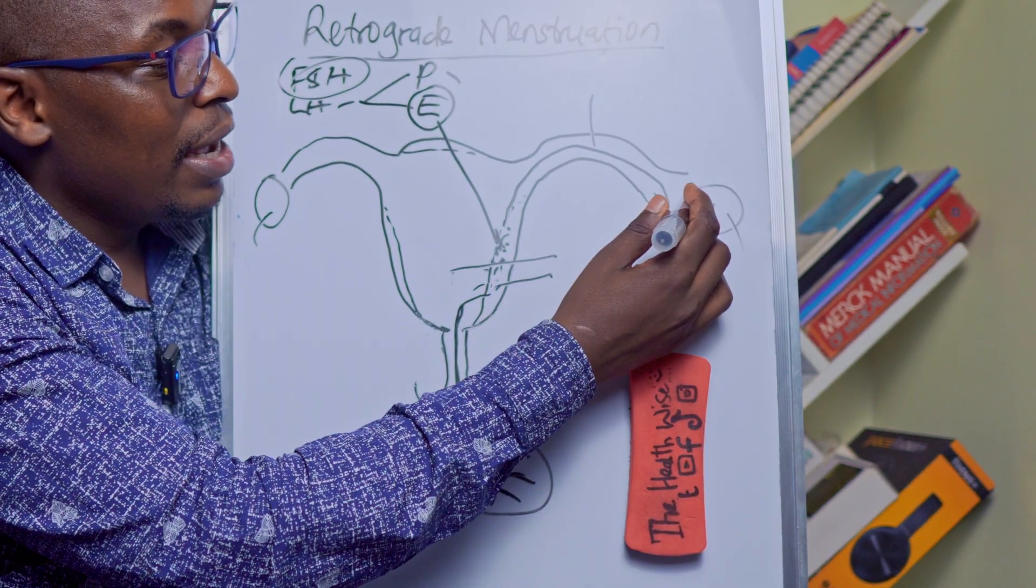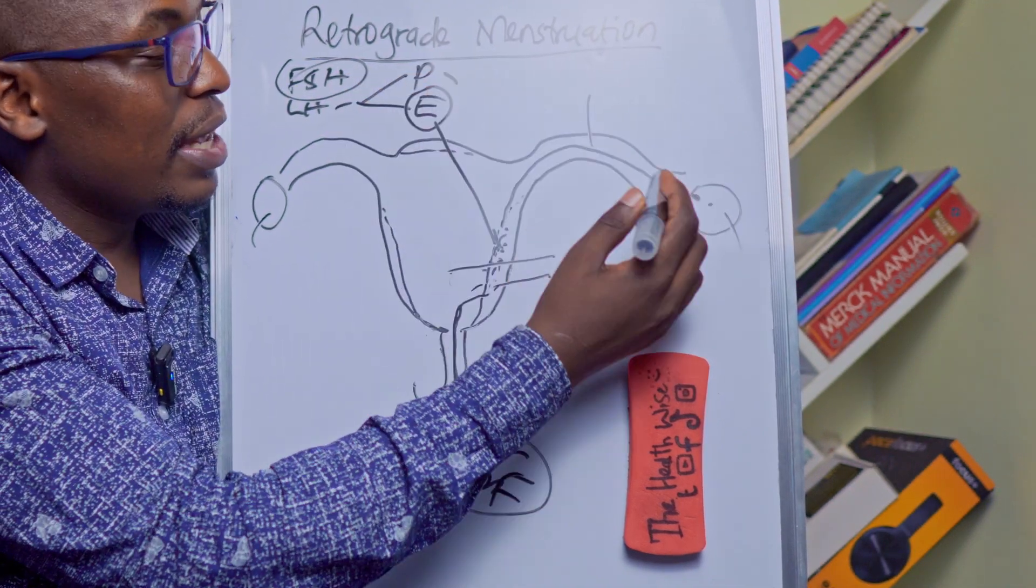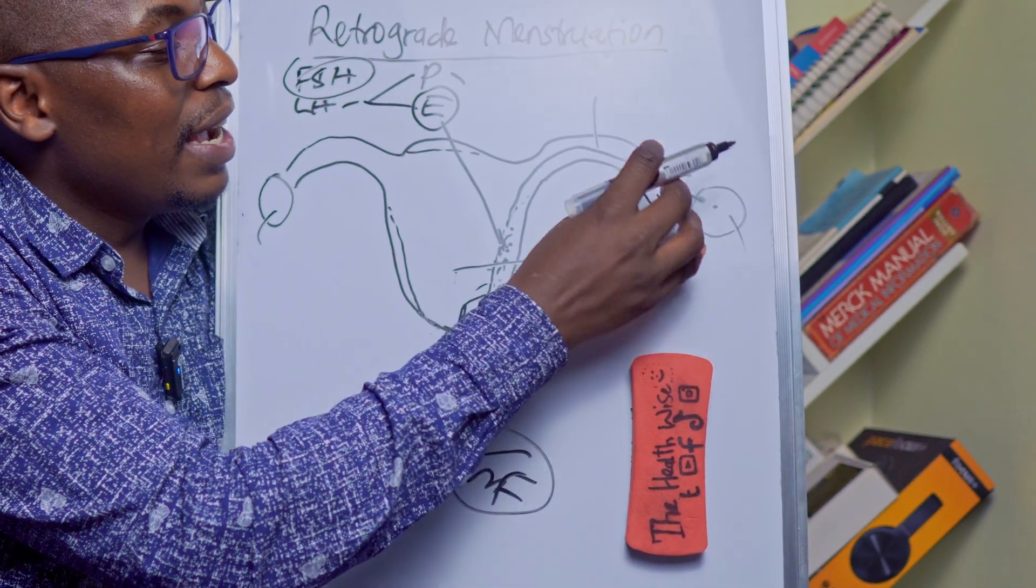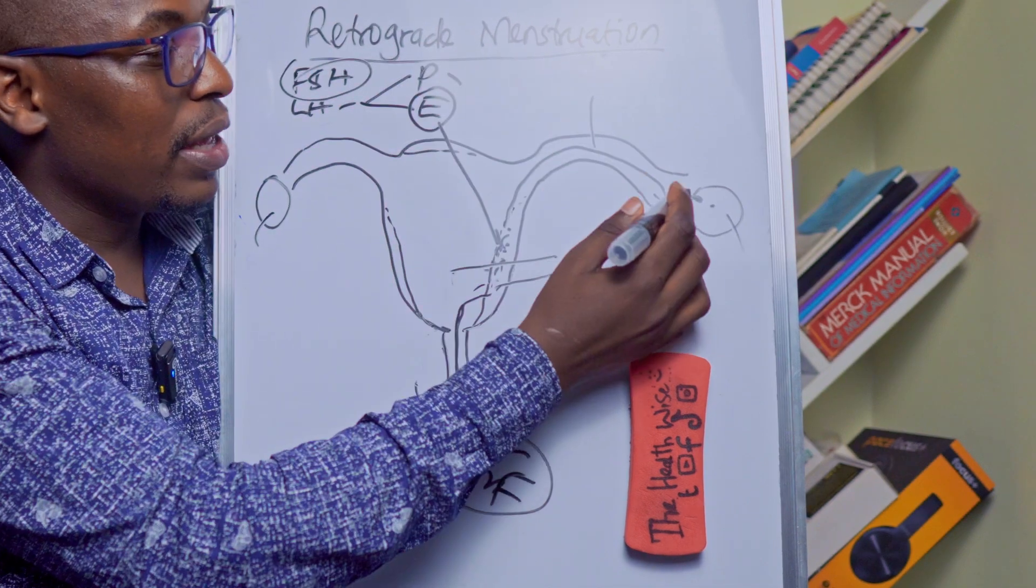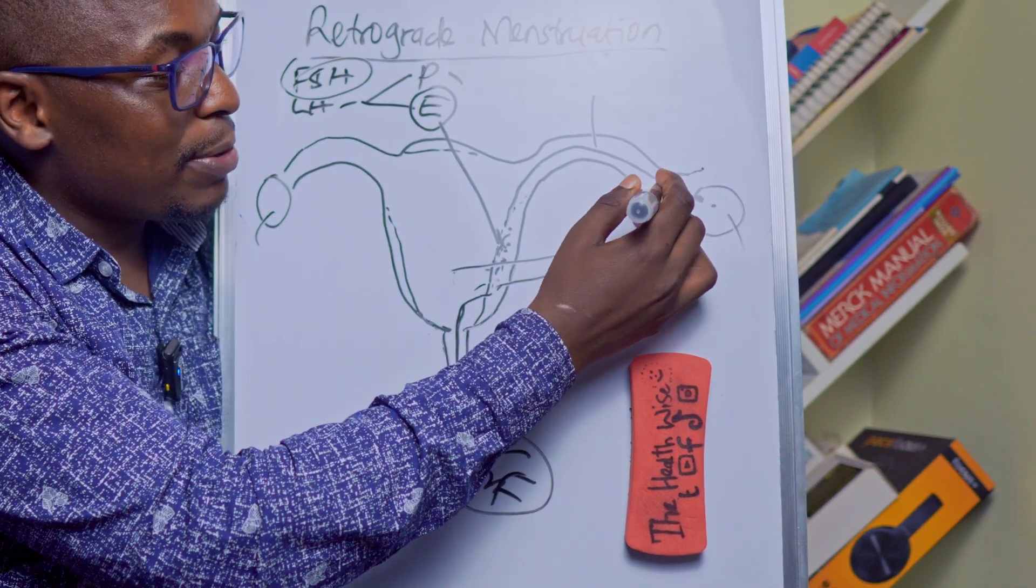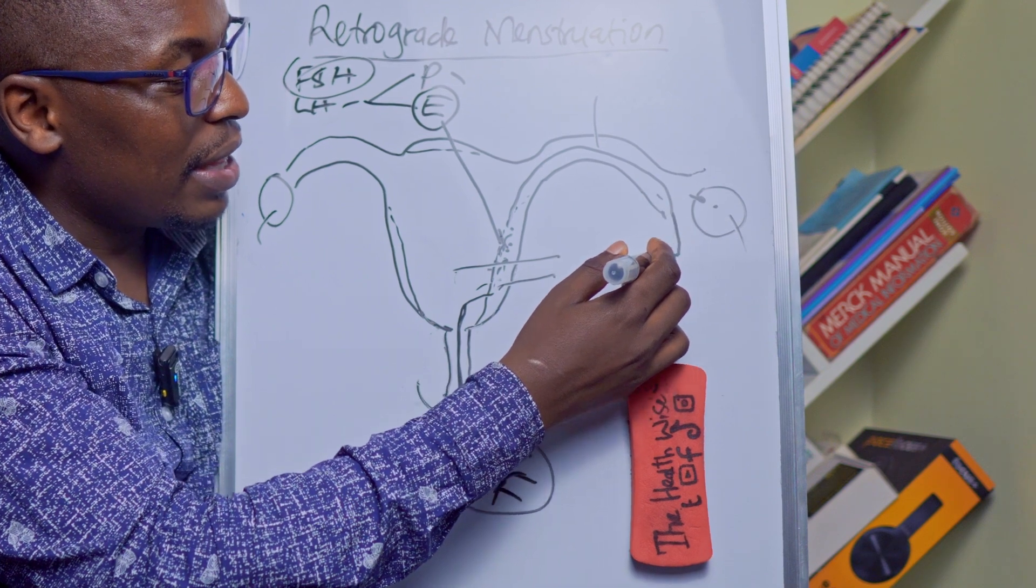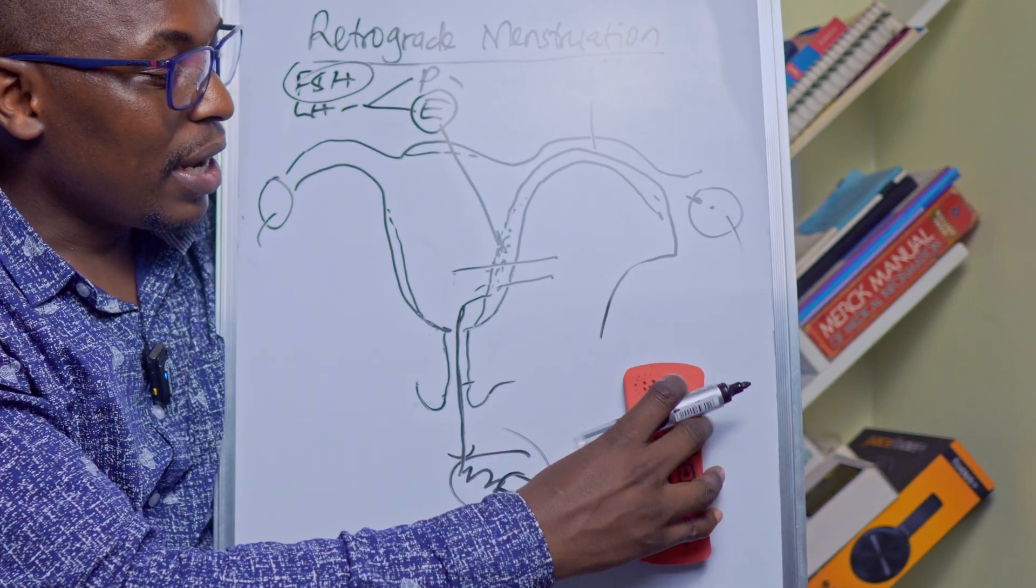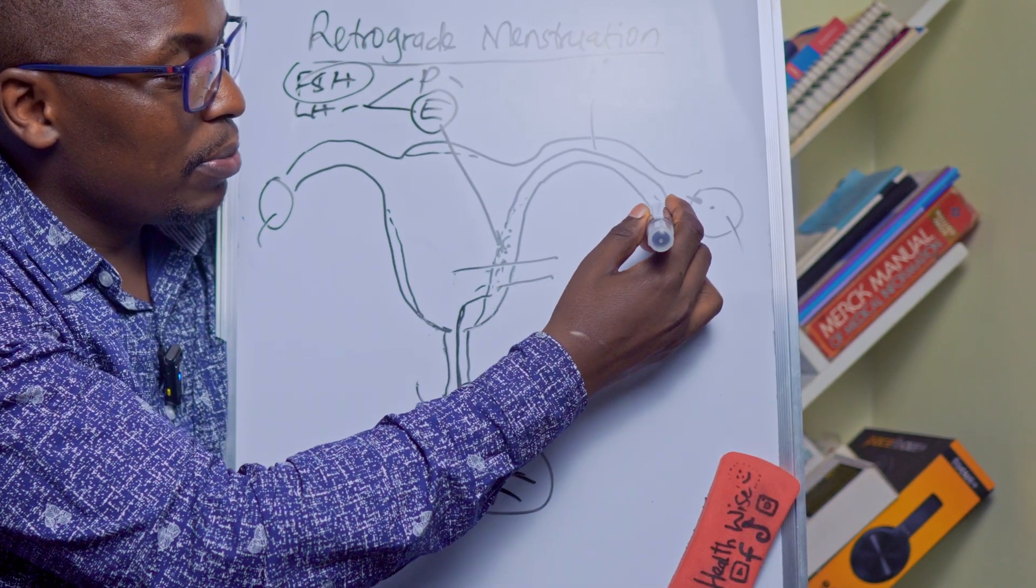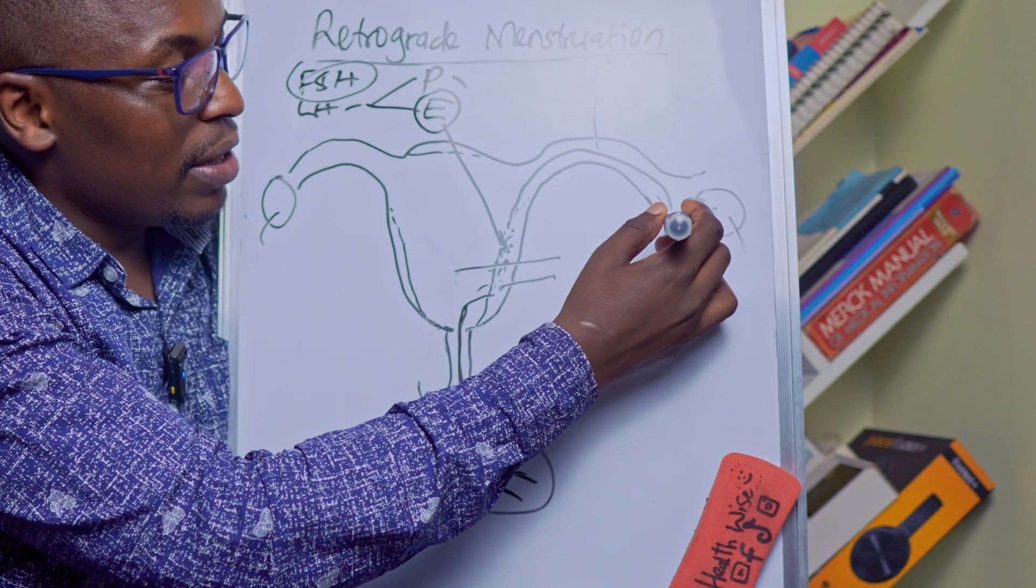Actually what usually happens here when you get an egg that's already mature and then luteinizing hormone causes ovulation, it's usually kind of sucked out of the ovary so there's a space here. Now this blood will flow outside and then get into your abdomen. You see this is the ovary, between this funnel and the ovary, this space.